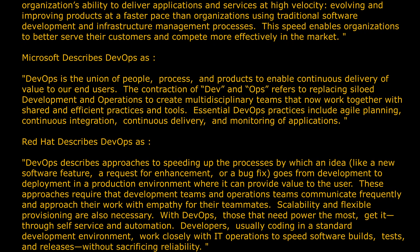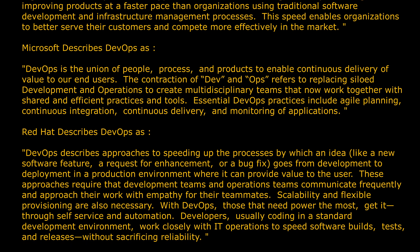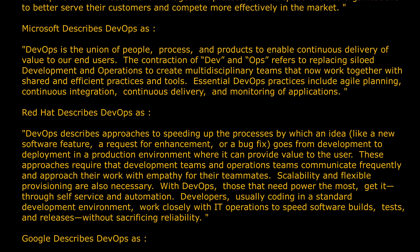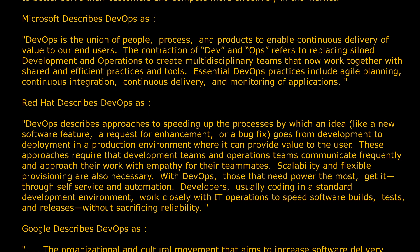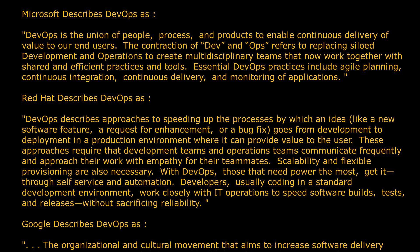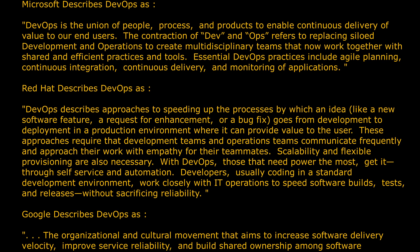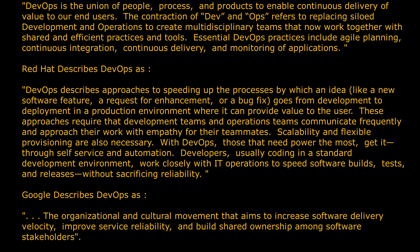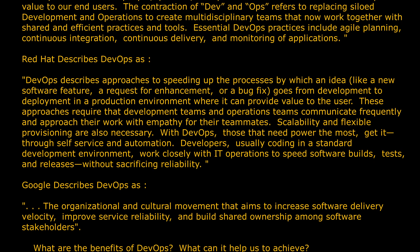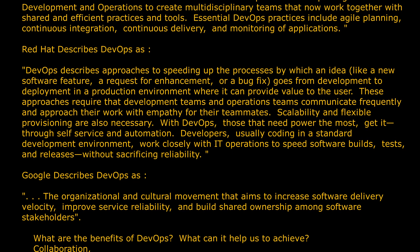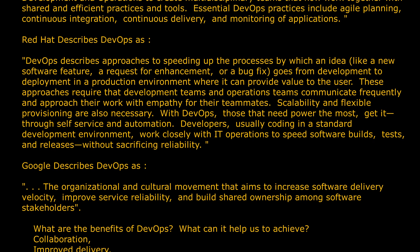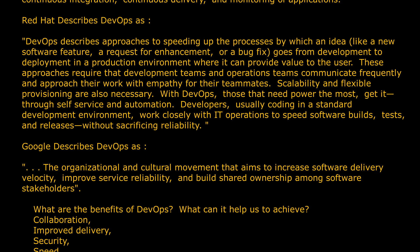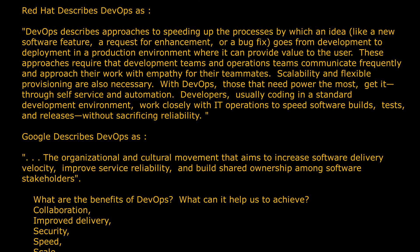Red Hat describes DevOps as approaches to speeding up the processes by which an idea — like a new software feature, a request for enhancement, or a bug fix — goes from development to deployment in a production environment where it can provide value to the user. These approaches require that development teams and operations teams communicate frequently and approach their work with empathy for their teammates. Scalability and flexible provisioning are also necessary.